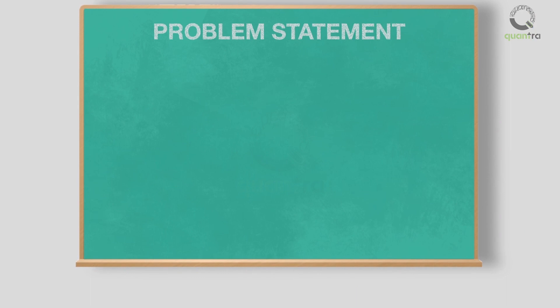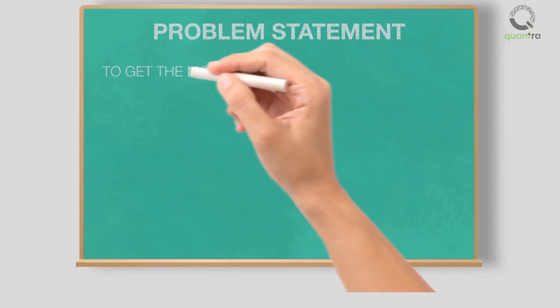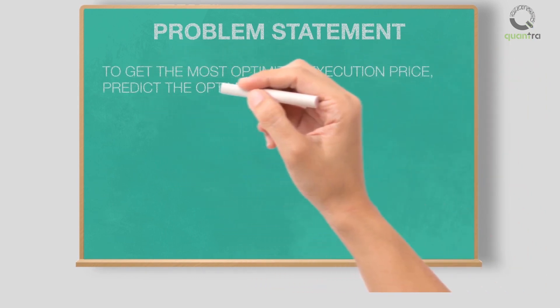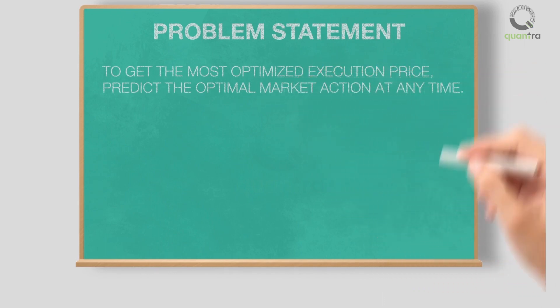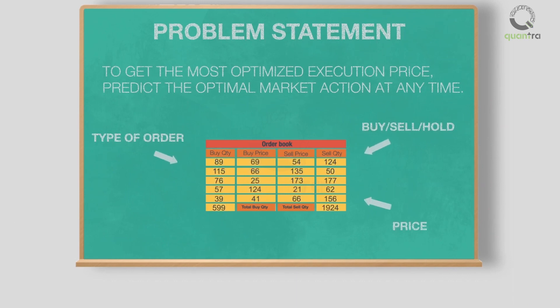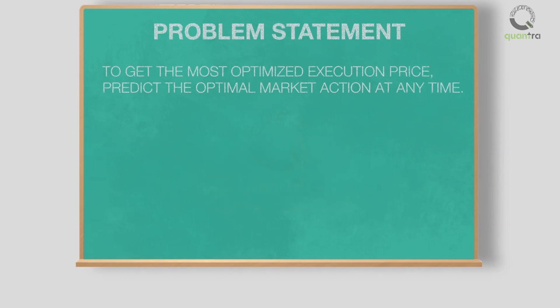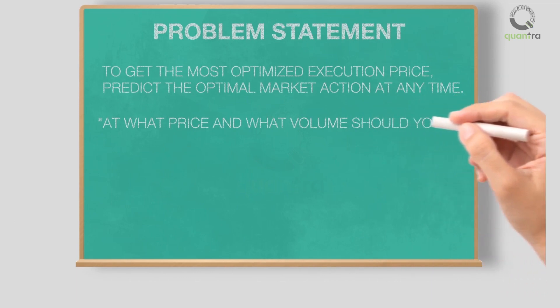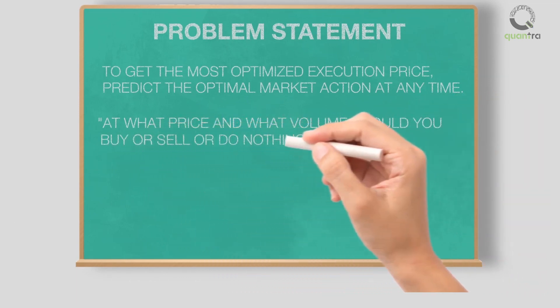From a machine learning perspective, the problem statement can be defined as follows: to get the optimized execution price, predict the optimal market action at any given time. A market action here refers to order details such as buy, sell, or hold, price, and the type of order that needs to be placed. In other words, the problem is whether you should buy, sell, or do nothing at any time t so that your profit is maximized.